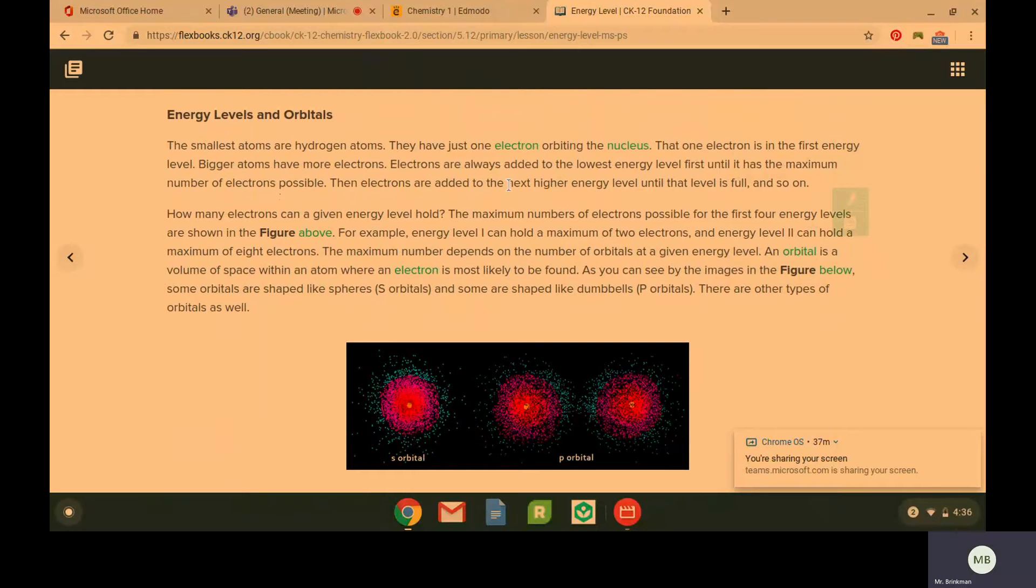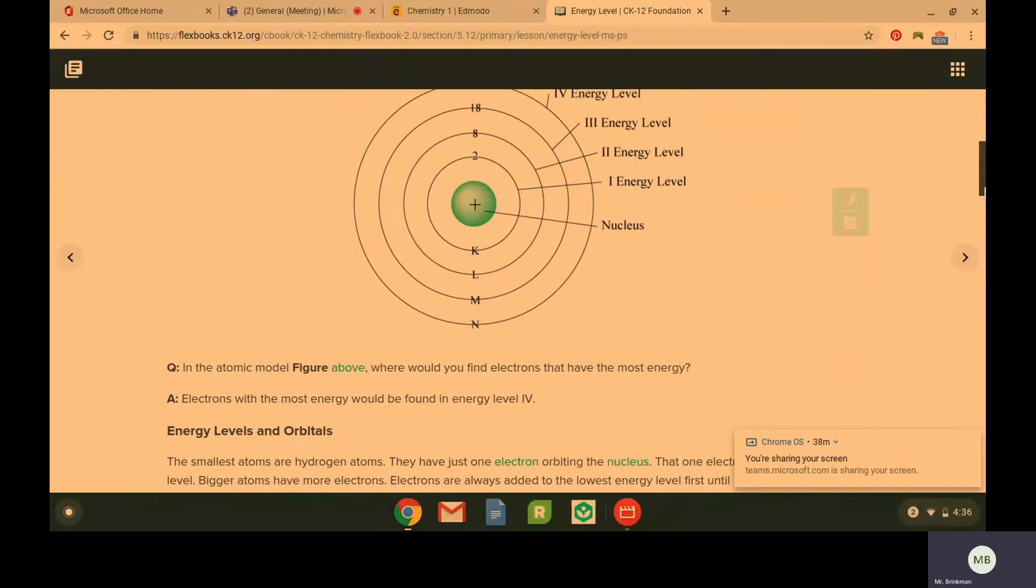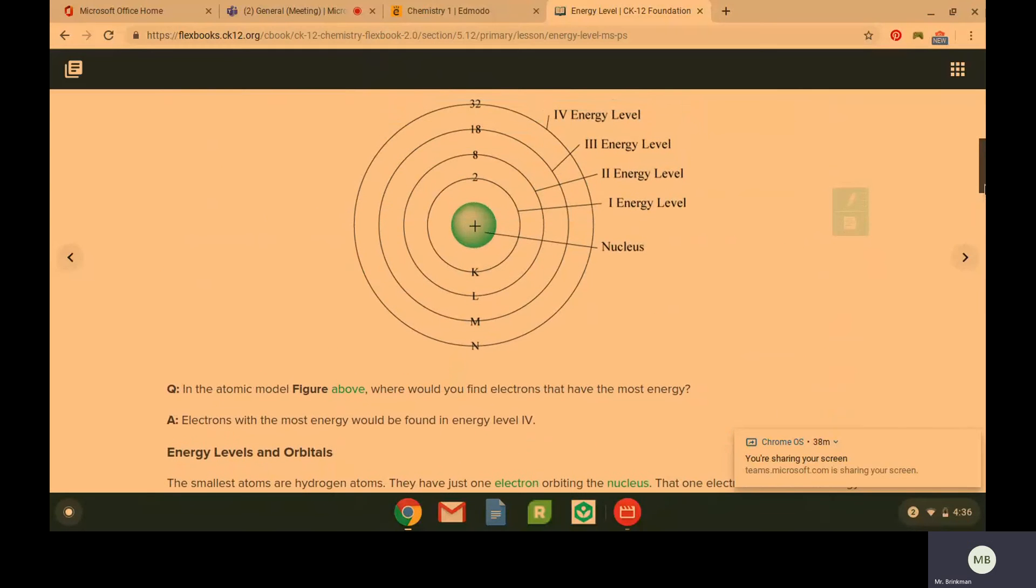So the maximum number of electrons possible for each energy level is going to depend on the number of orbitals. So energy level one in our diagram only has one orbital. So it can hold two electrons.